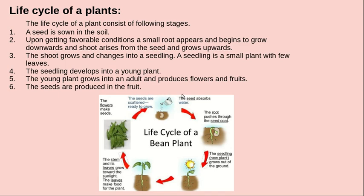As you can see in this slide, we have seen the seed placed in the soil. When given water and warmth from sunlight, the seed absorbs water. Roots grow from the seed downwards. A new small plant grows out of the ground — this is the seedling. Then the stem and its leaves grow towards the sunlight.